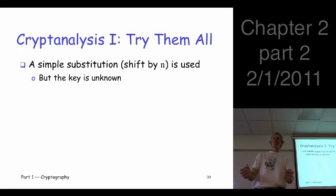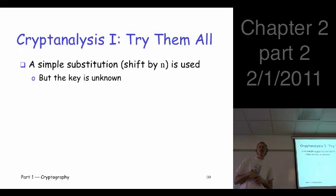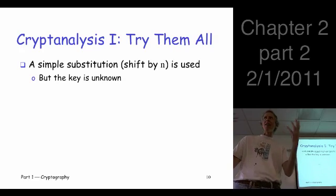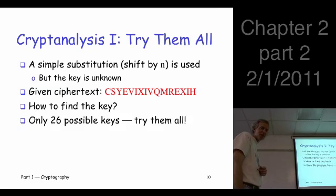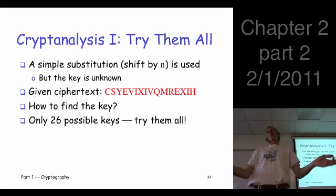You could brute force it — try all possible keys. How many keys do you have to try before you expect to find the correct one? At most 25, at worst 26. On average you get halfway through, so about 13 tries on average. You expect to find the correct solution after trying about half the keys. Given this ciphertext, you trial all 26 — brute force, try them all.